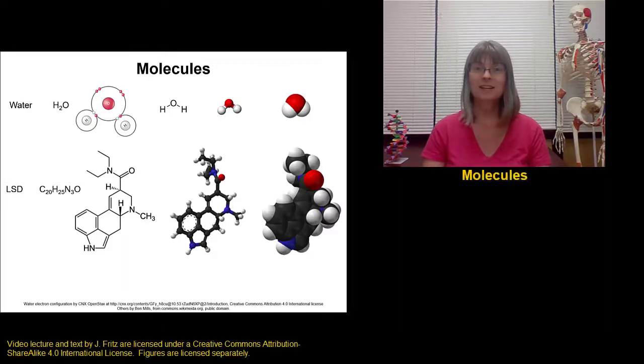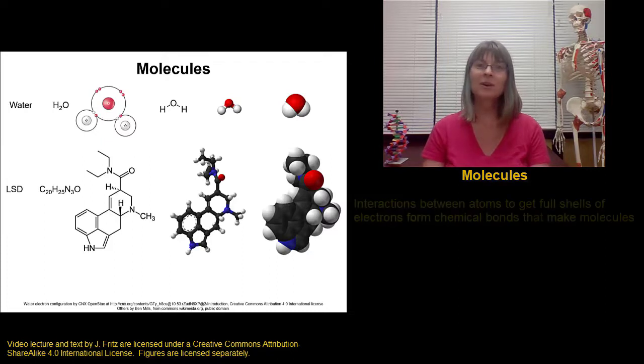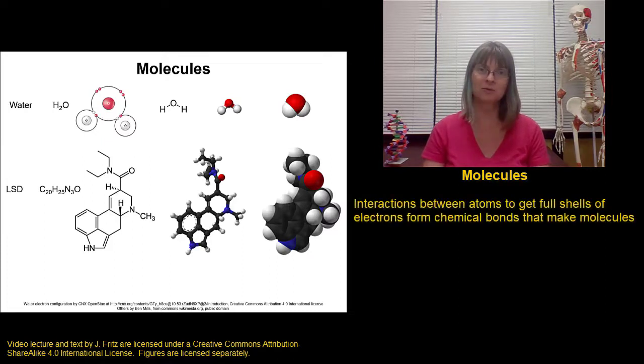An atom's quest to become stable by having a full shell of electrons is what leads to the formation of molecules, because a lot of atoms have to interact with each other in order to get the electrons that they need to have full outer shells. Molecules are formed when two or more atoms share chemical bonds. They're bonded together.